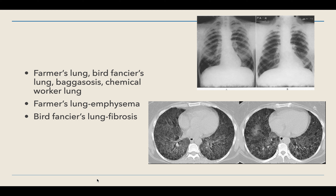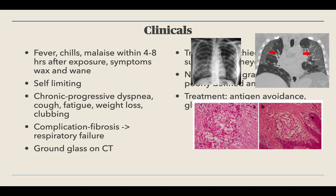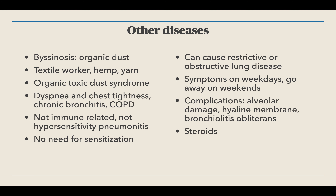Specific diseases include farmer's lung, bird fancier's lung, bagassosis, and chemical worker's lung. Farmer's lung leads to emphysema and bird fancier's lung leads to fibrosis, as seen on MRIs. General symptoms include fever, chills, and malaise within 48 hours that wax and wane and are self-limiting, plus chronic progressive dyspnea, cough, fatigue, weight loss, and clubbing. Treatment is antigen avoidance and wearing a mask. It appears as ground glass on CT.